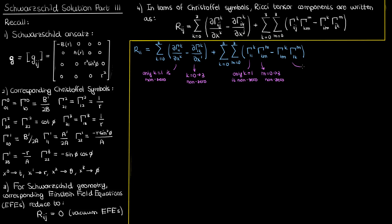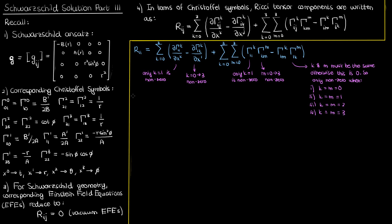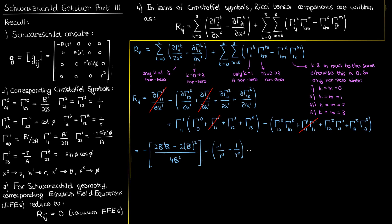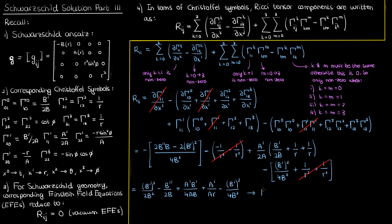For the fourth term, if k and m are not the same, then the term becomes zero — for instance if k were 1, then m can only be 1 because Christoffel symbols like gamma-1-1-3 or gamma-1-1-2 are zero. Applying all these simplifications gives us the R₁₁ Ricci tensor component, where these two derivative terms cancel out. We evaluate the derivatives using the quotient rule for the Gamma-0-1-0 symbol and simple differentiation for the Gamma-2-1-2 and Gamma-3-1-3 symbols, plug in the remaining terms, and simplify to get our expression for R₁₁.